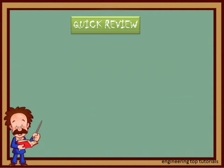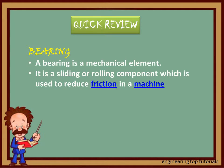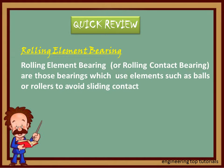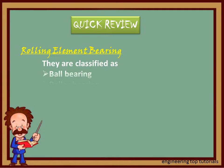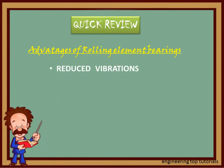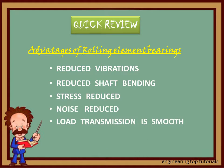Quick review: A bearing is a mechanical element — it is a sliding or rolling component which is used to reduce friction in a machine. Rolling element bearings, or rolling contact bearings, are those bearings which use elements such as balls or rollers to avoid sliding contact. They are classified as ball bearing, roller bearing, and needle bearing. The roller bearings are further classified as cylindrical bearing, tapered bearing, and barrel bearing. The advantages of rolling element bearings are reduced vibrations, reduced shaft bending, reduced stresses, reduced noise, and very smooth load transmission.